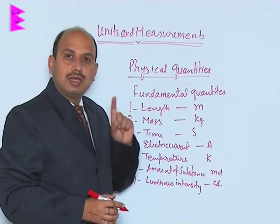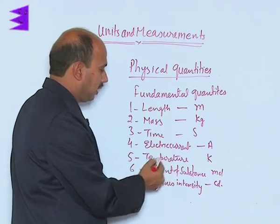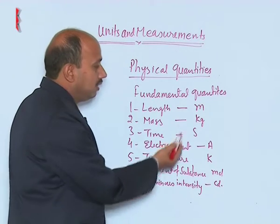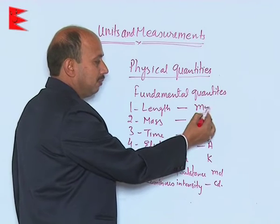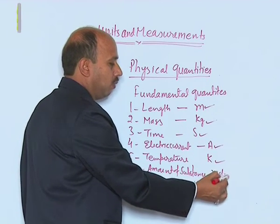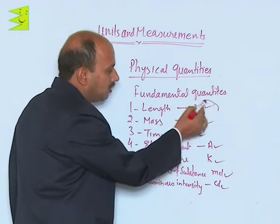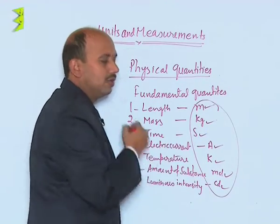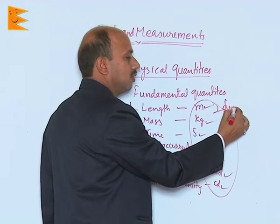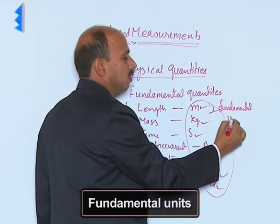So, there are seven basic quantities: length, mass, time, electric current, temperature, amount of substance, and luminous intensity. These are measured in meter, kilogram, second, ampere, kelvin, mole, and candela respectively. These units are known as fundamental units.